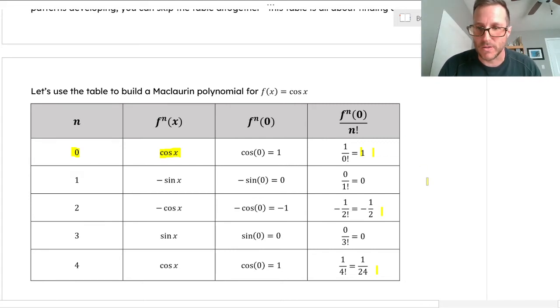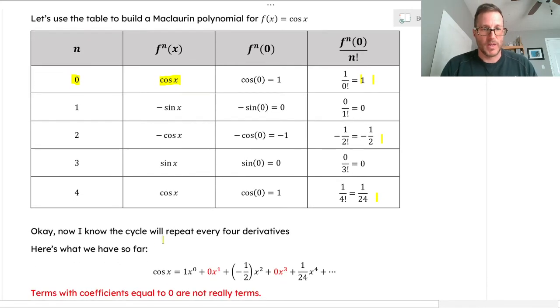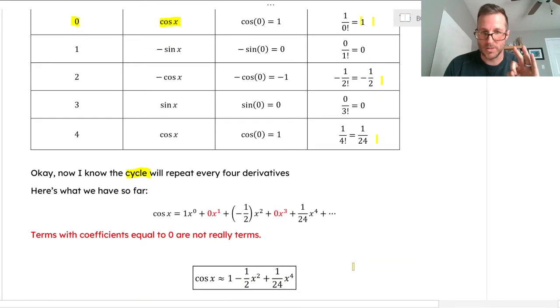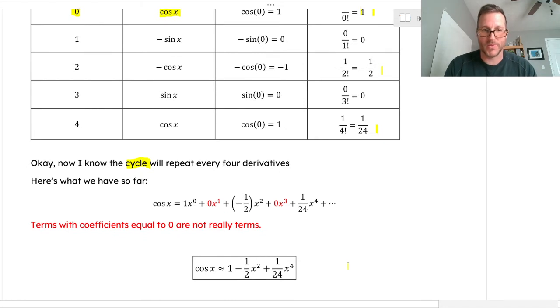Let's go ahead and write out the first few terms that we've gotten so far. We're going to cycle every four derivatives. What we have so far is writing all of these coefficients: one x to the zero, zero x to the first, our coefficient negative one half x squared, zero x cubed, and then one over four factorial x to the fourth. Those are three terms, technically, because those zeros are not terms. Here are the first three terms of the polynomial, the Maclaurin polynomial for cosine of x.